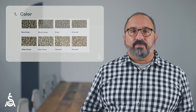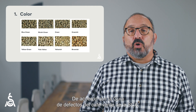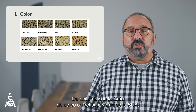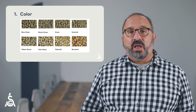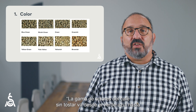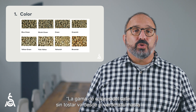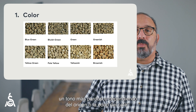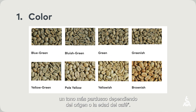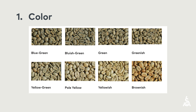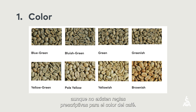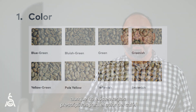First, color. According to the SCA Grading Handbook, unroasted coffee's color ranges from a blue-green to a pale-yellow, depending on origin, processing, or age. Color should be noted by the grader, although there are no prescriptive norms for coffee color.